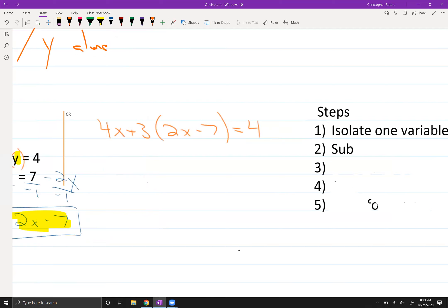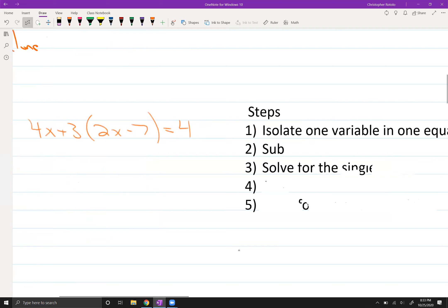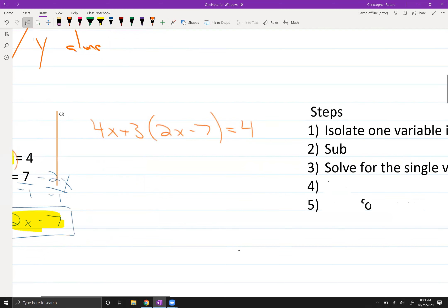What should I do after this? Well, now we're going to solve for the single variable. So I know I'm doing something right because I now have a single variable. It's all in terms of X. So here we go. Distribute 4X plus 6X minus 21 equals 4. 10X, they are like terms. I'm going to add 21 while I'm doing this. So 10X is equal to 25, and divide by 10. So X turns out to be 2.5.